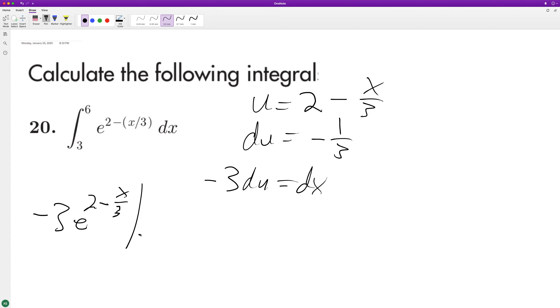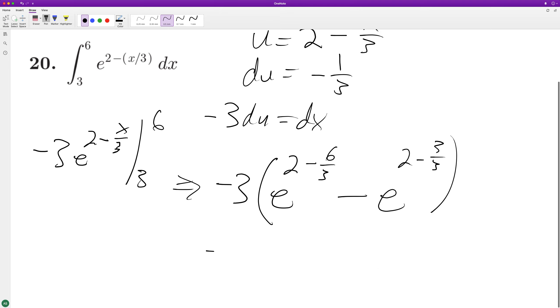So we're going from three to six, and when we do this, what we're going to get is, leave the negative three on the outside, E raised to the two minus six over three, minus E raised to the two minus three over three. So it's the same thing as negative three E raised to the, that's E raised to the negative one minus E raised to the one.